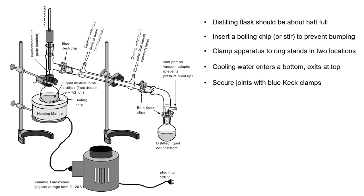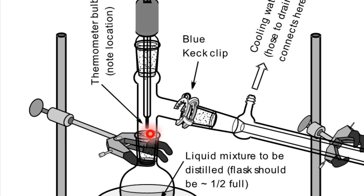The joints on the apparatus should be secured with Keck clamps. These are the plastic clamps that are shown on these joints. Make sure that the thermometer bulb is in the correct spot. You'll want to take a careful look at this diagram and see that your thermometer bulb here is right there.